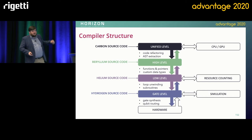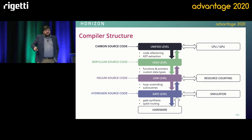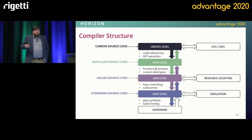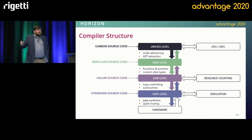In terms of the compiler structure we have, at the top level you take in something that's effectively a classical language — quite like MATLAB or Octave — and that gets compiled down. You can also put in source code at other levels. We call the classical language Carbon, and beneath that we have something called Beryllium, which you can think of as Quantum C++. Beneath that we have Helium, which is basically Quantum Basic, and below that we have Hydrogen, which is a bit like Quil — a gate-level language.